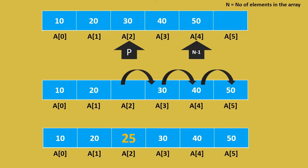Let us say I want to insert a new element, 25, at the second location. Array at the second location already has 30 as its element. So if I want to insert 25 at the second location, then I need to move 30 to the next location, that is the third position.